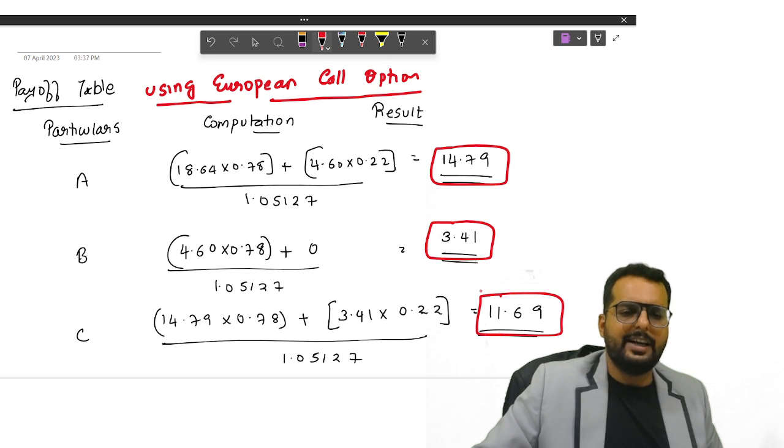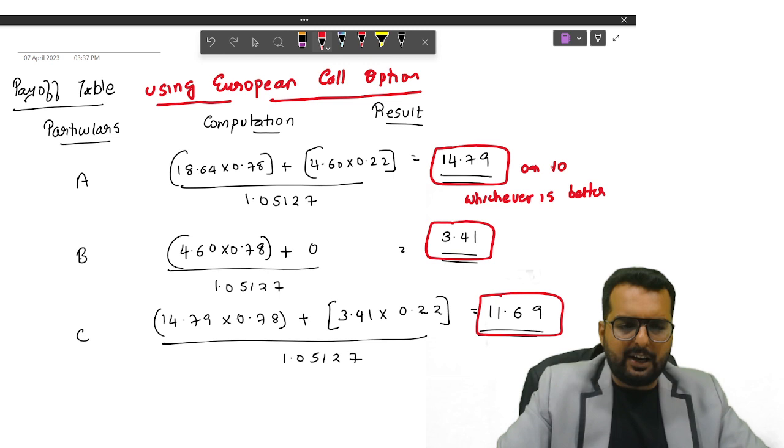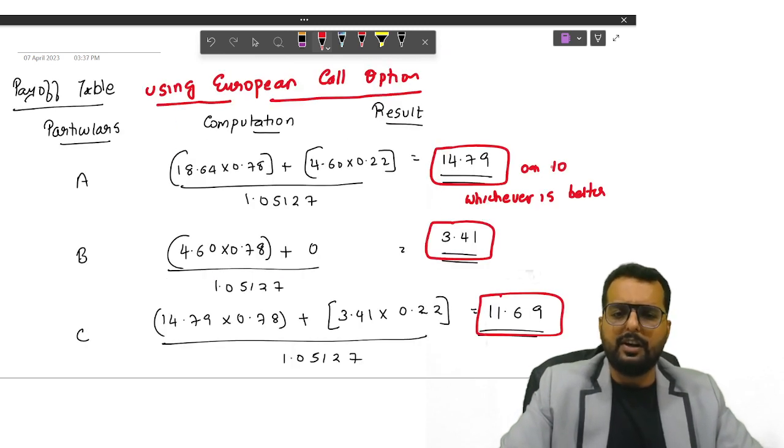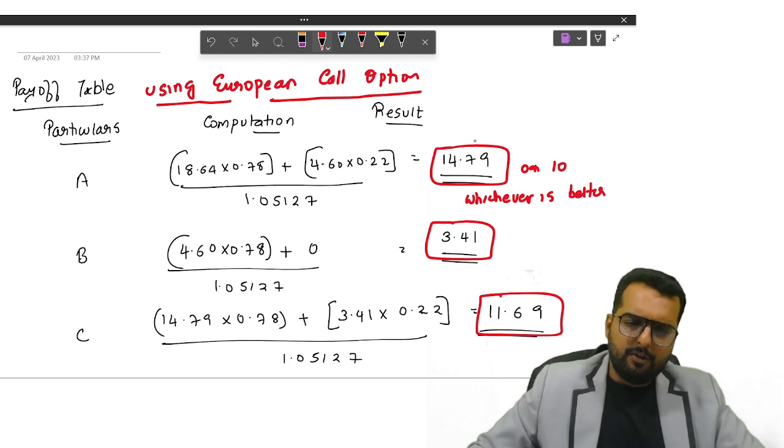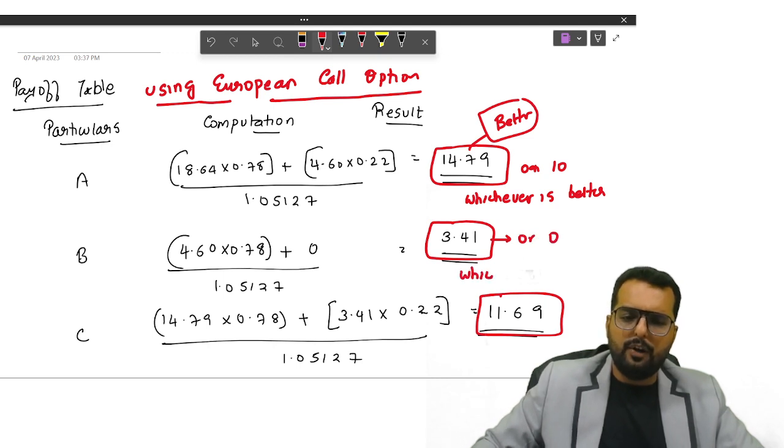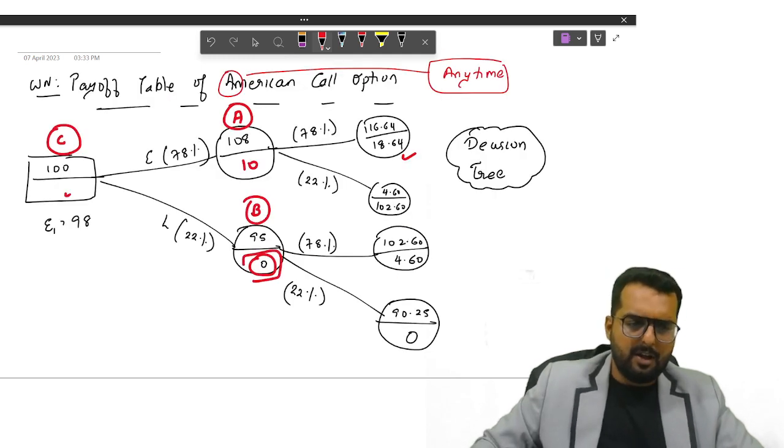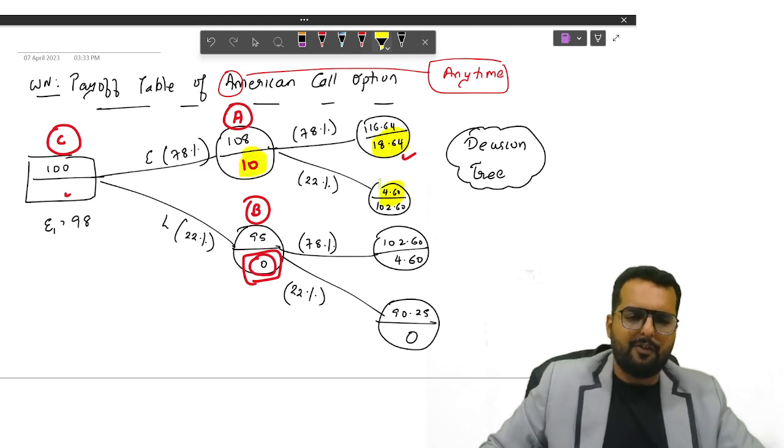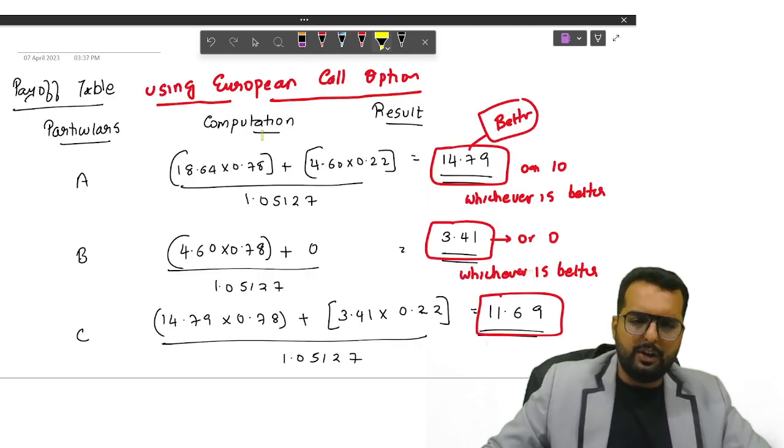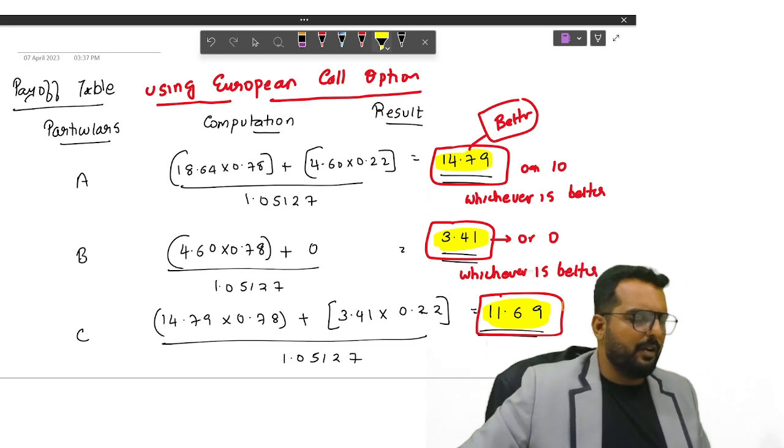If it was American option, ideally what we should do is we should compare this with 10 and see whichever is better. Because at node A, you are already getting 10 over there. So tell me which is better friends, 14.79 is better or 10 is better? 14.79 is better. Okay, here it will be 3.41 or 0, whichever is better. How did I get that 0 over there now? The 0, American can be either exercised at this point or at this point. That's why we are comparing the average of this versus 10, whichever is better. So here this becomes better, here this becomes better, and this becomes your final answer. Everybody clear with this part?